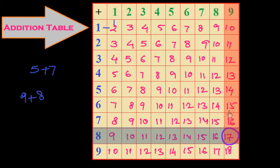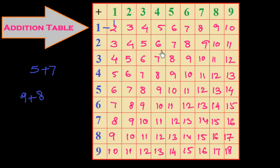Look here: nine and eight plus nine is seventeen. In this way you can easily add numbers with the help of this table. You can find what the summation of any two numbers from one to nine will be. For single-digit numbers, follow this table and you can easily get the answer.